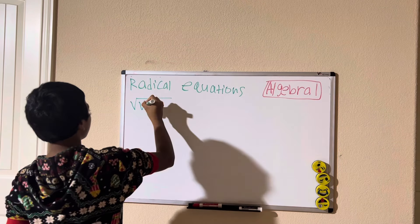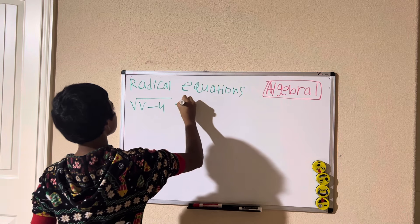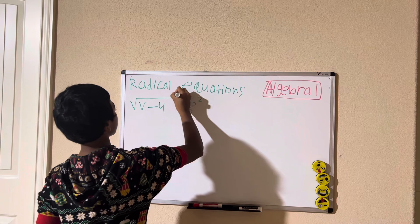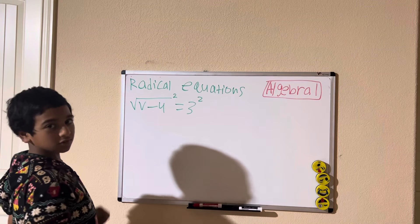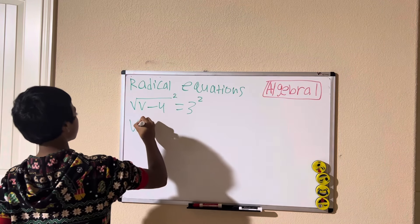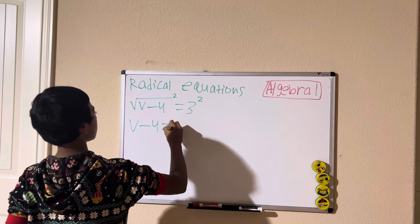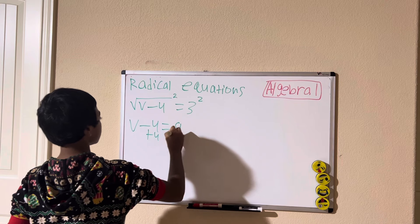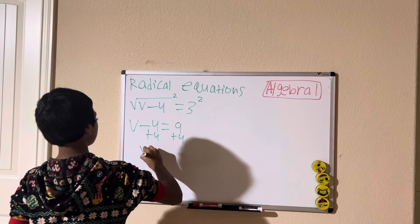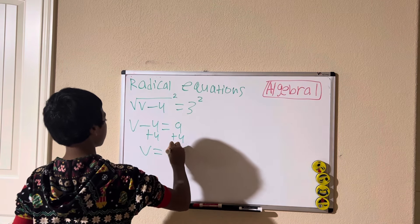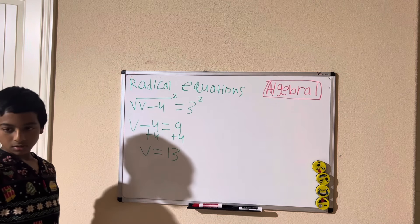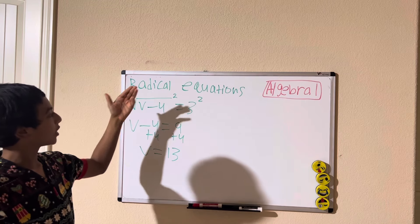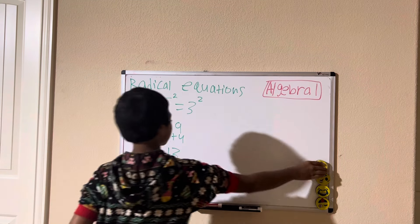To start, we square both sides of the equation, canceling out the square root, giving us v minus 4 equals 9 (since 3 times 3 is 9). Now let's solve the equation and we get v equals 13. Let's check: 13 minus 4 is 9, and the square root of 9 is 3. This is a correct statement.